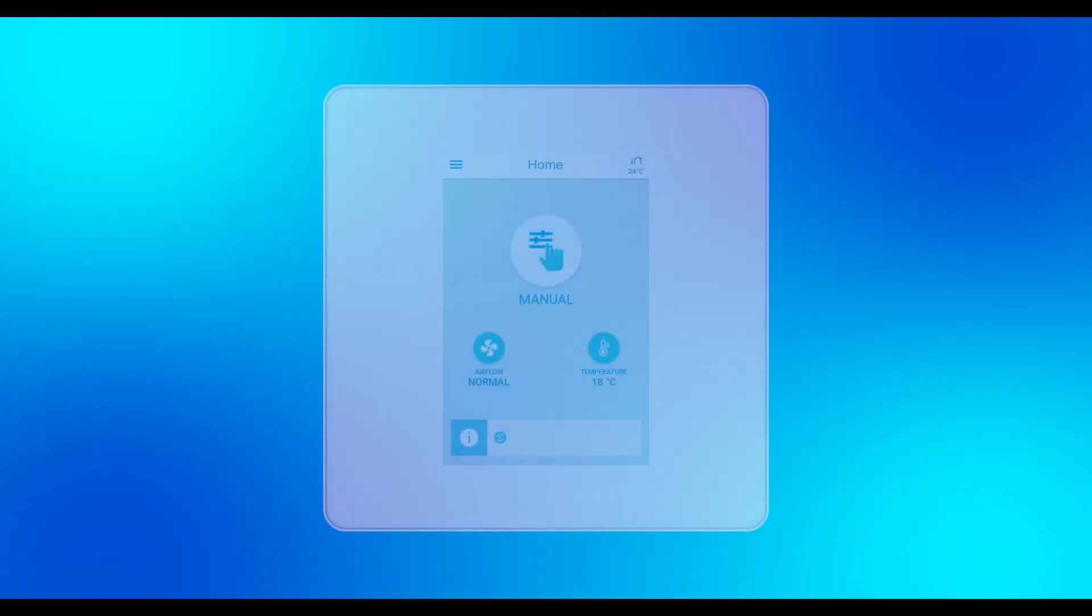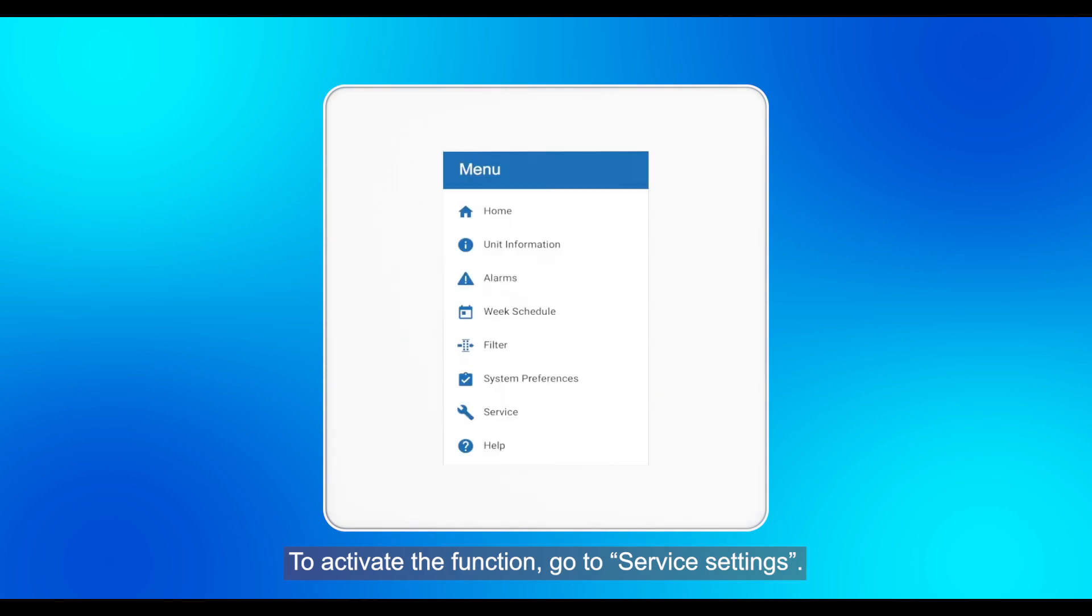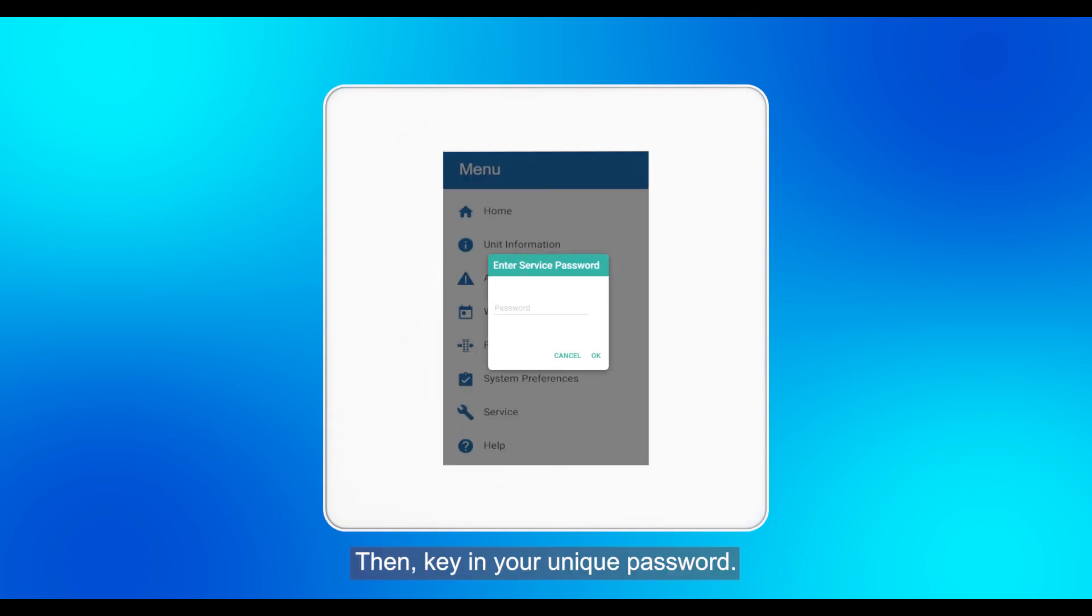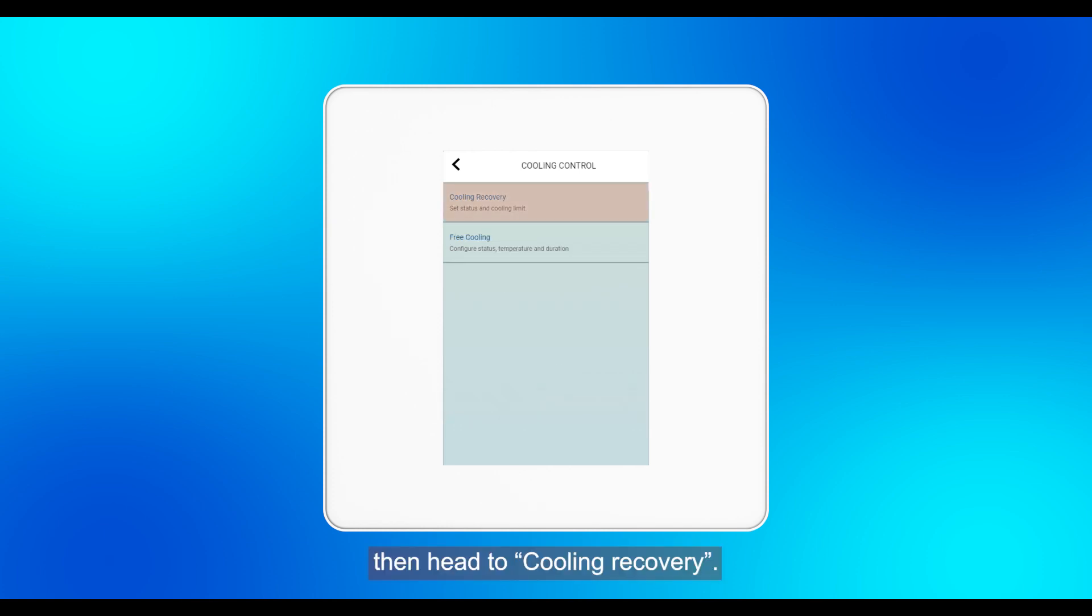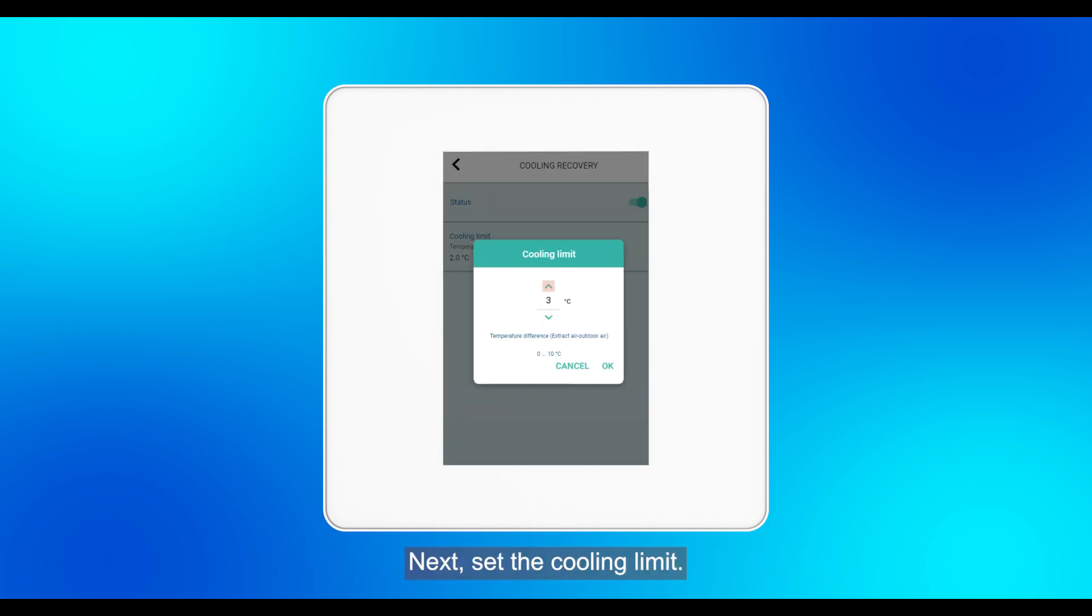To activate the function, go to service settings, then key in your unique password. Go to control regulation and select cooling control, then head to cooling recovery. Ensure that the status of the function is turned on. Next, set the cooling limit.